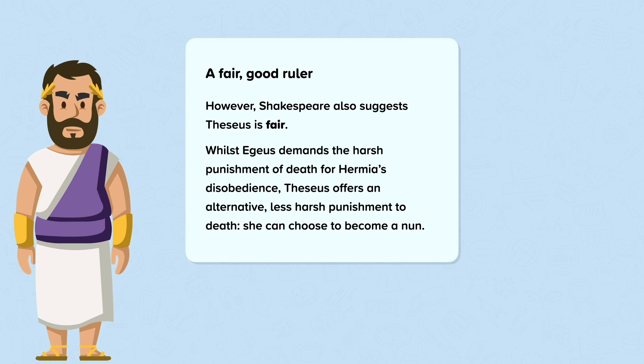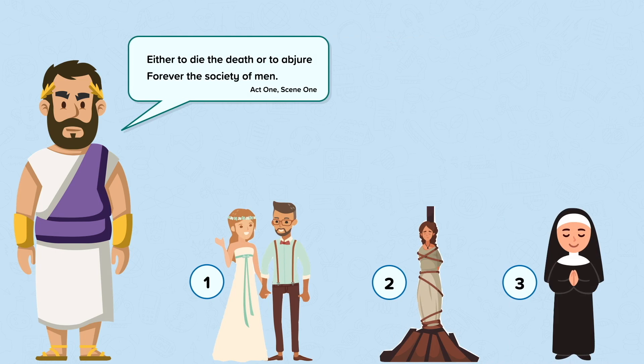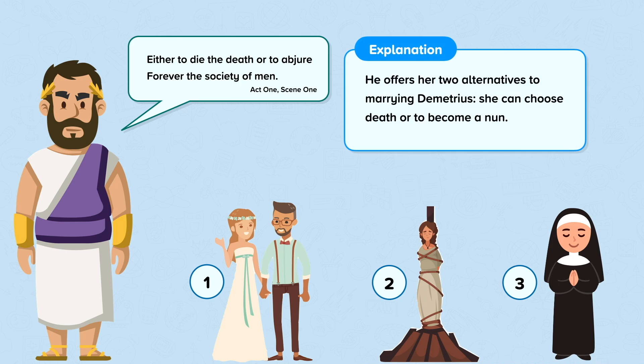Whilst Aegeus demands the harsh punishment of death for Hermia's disobedience, Theseus offers an alternative, less harsh punishment. He says that Hermia can choose to become a nun. Theseus tells Hermia she will need to choose "either to die the death, or to abjure forever the society of men." He offers her two alternatives to marrying Demetrius: death by execution, as her father demands, or becoming a nun, which will mean never marrying or meeting a man.